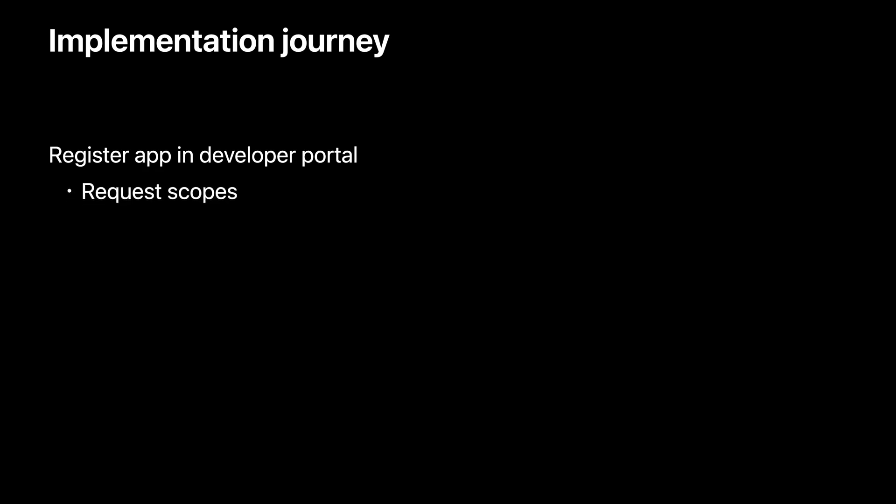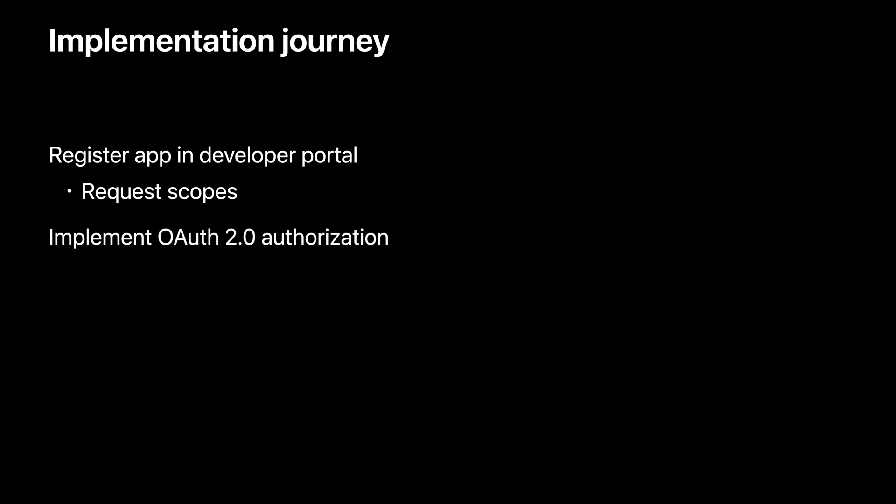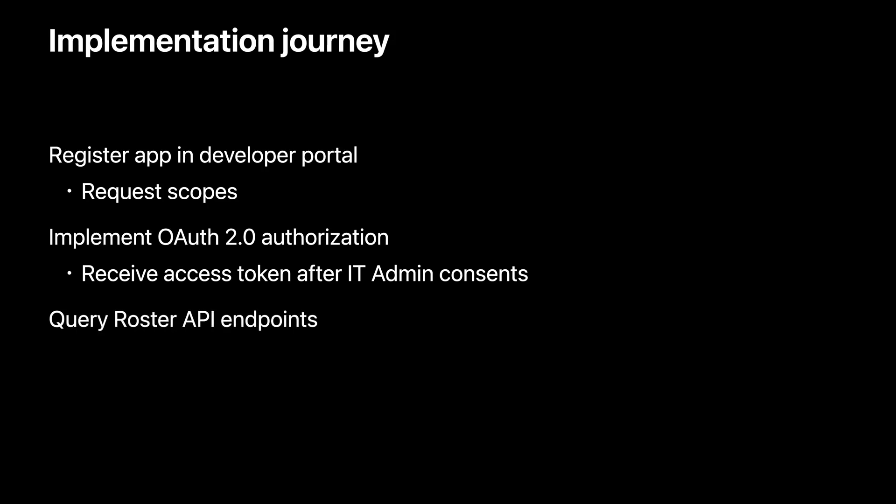What does your implementation journey look like? The first step is to register in the developer portal, which involves requesting scopes. The next step is to request consent from the IT admin to share the data with your app through the OAuth 2.0 authorization flow. Finally, your app queries the Roster API endpoints to fetch the data. Let us take a look at each of these steps.